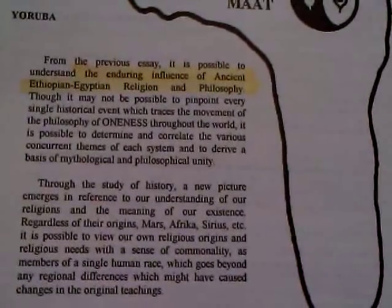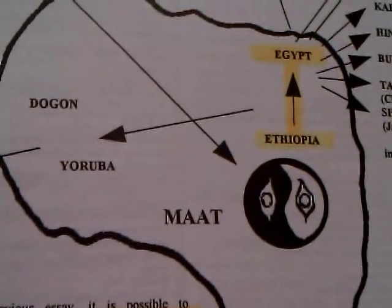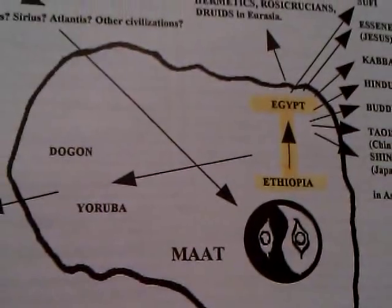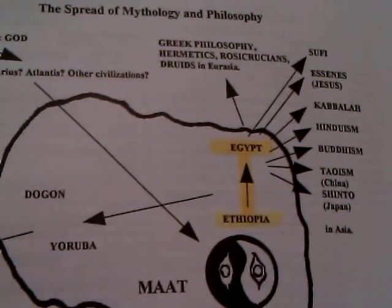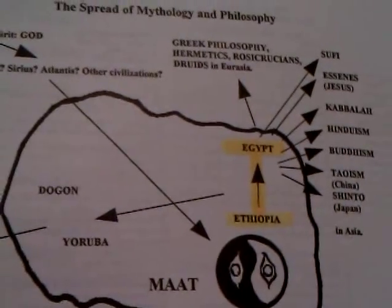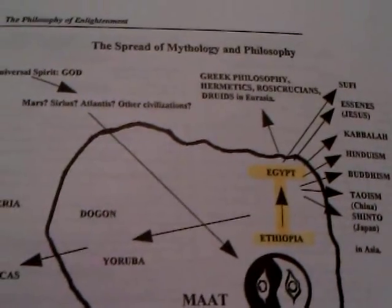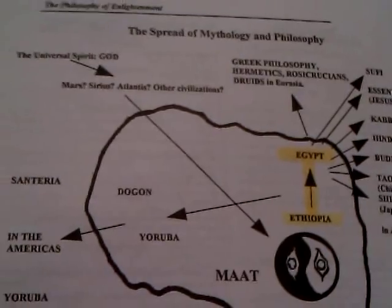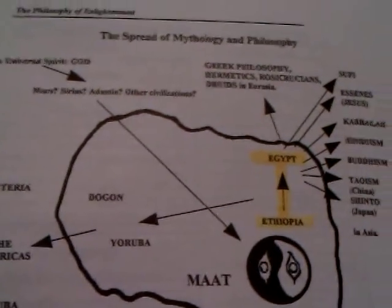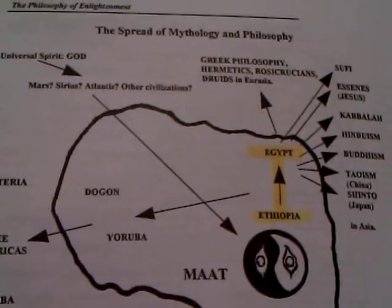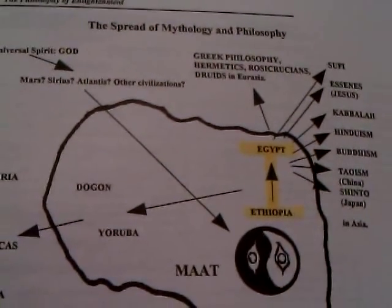From the previous essays, it is possible to understand the enduring influence of ancient Ethiopian and Egyptian religion and philosophy. Though it may not be possible to pinpoint every single historical event which traces the movement of the philosophy, or the love of wisdom of oneness — what some Europeans call monotheism — throughout the world, it is possible to determine and correlate the various concurrent themes of each system and derive a basis of mythological and philosophical unity.